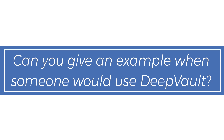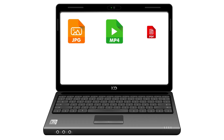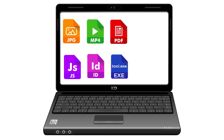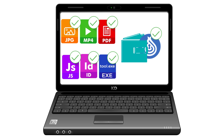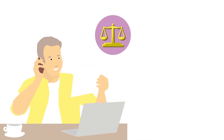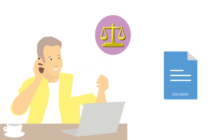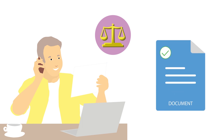Can you give an example of when someone would use DeepVault? You can check to see if a downloaded file from the internet is the original one. This could be useful when someone is sending legal documents by mail — the digital copy could be used and verified instead of sending the original. If even one letter was changed in the document, it would not pass verification, allowing you to be 100% sure that someone hasn't changed the file in any way.